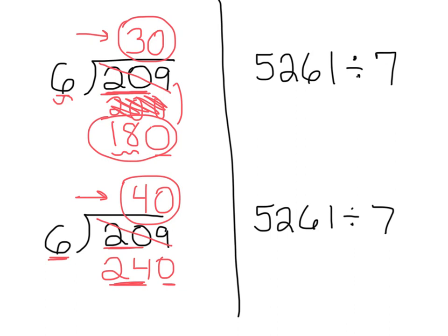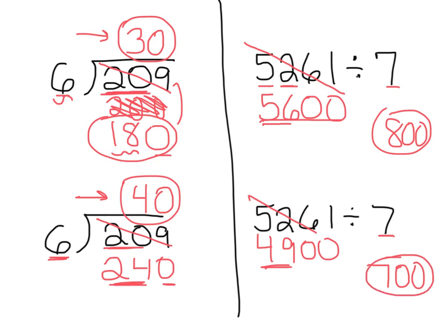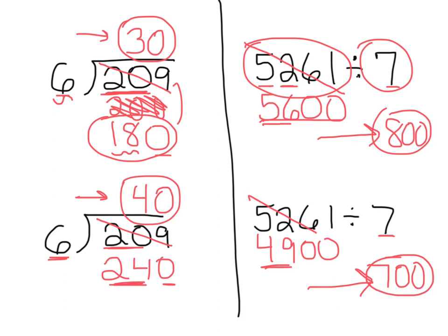Let's look at the one in the upper right: 5,261 divided by 7. Does 7 divide into 5? No. Does 7 divide into 52? Yes, but not evenly. So we need a compatible number. Maybe you're thinking 5,600. Now I can use mental math: 56 divided by 7 is 8, add two zeros — my estimate is 800. Or maybe you were thinking 4,900. Both are fine. 49 divided by 7 is 7, add two zeros. So if you were to estimate 5,261 divided by 7, 800 would be a good estimate and 700 would be a good estimate.